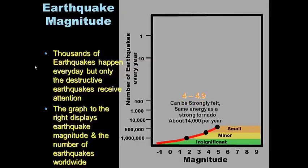Magnitude 4–4.9 can be strongly felt — about the same energy as a strong tornado — around 14,000 per year. You can definitely feel a magnitude 4 especially if you're near the epicenter.